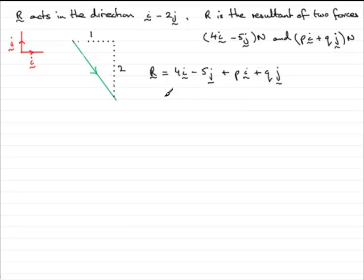Now whenever you're adding vectors together, it's always a good idea to group the i and the j components together. So what we've got here is 4 plus p in the i direction. And then plus, as far as the j components go, we've got minus 5 plus q. I'm going to turn that round as q minus 5 in the j direction.